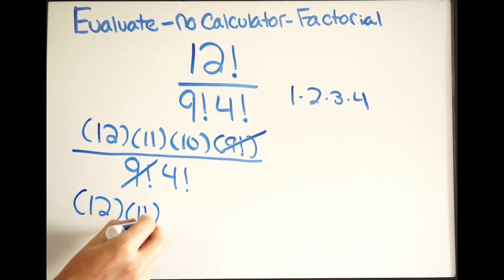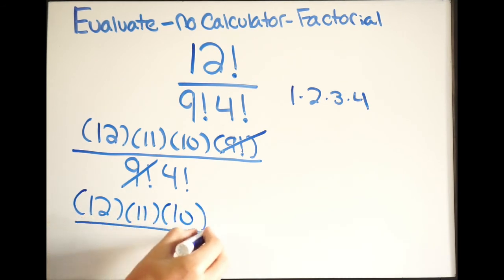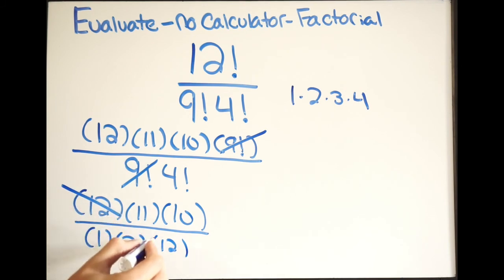12 times 11 times 10, and then we said 3 times 4 is 12, so now I have 1 times 2 times 12. Now look what happens to the 12s. They cancel.